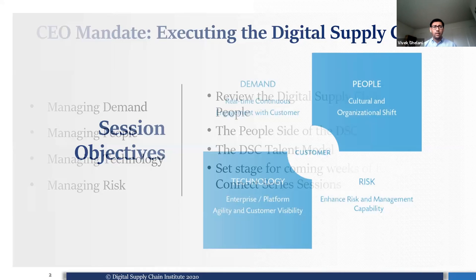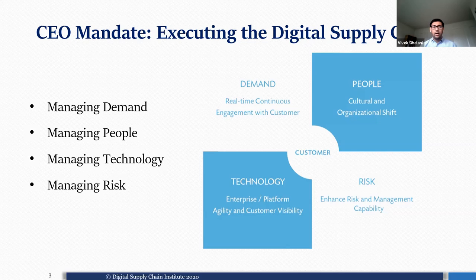Those of you who joined us last week will recall we talked about the four areas of the digital supply chain: demand, people, technology, and risk. For those joining for the first time, the digital supply chain is a customer-centric platform model that connects these four aspects. The Digital Supply Chain Institute developed these ideas by talking to 26 supply chain executives and leaders across the world back in 2016. I suggest everyone read Frontside Flip to get more details on the four buckets.